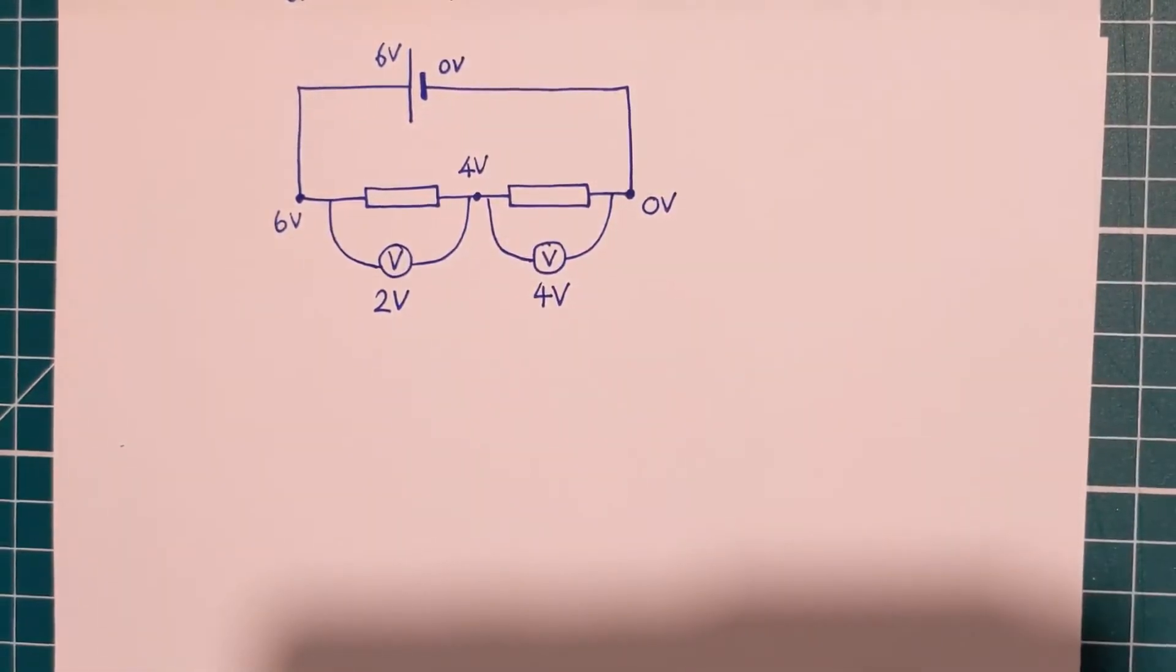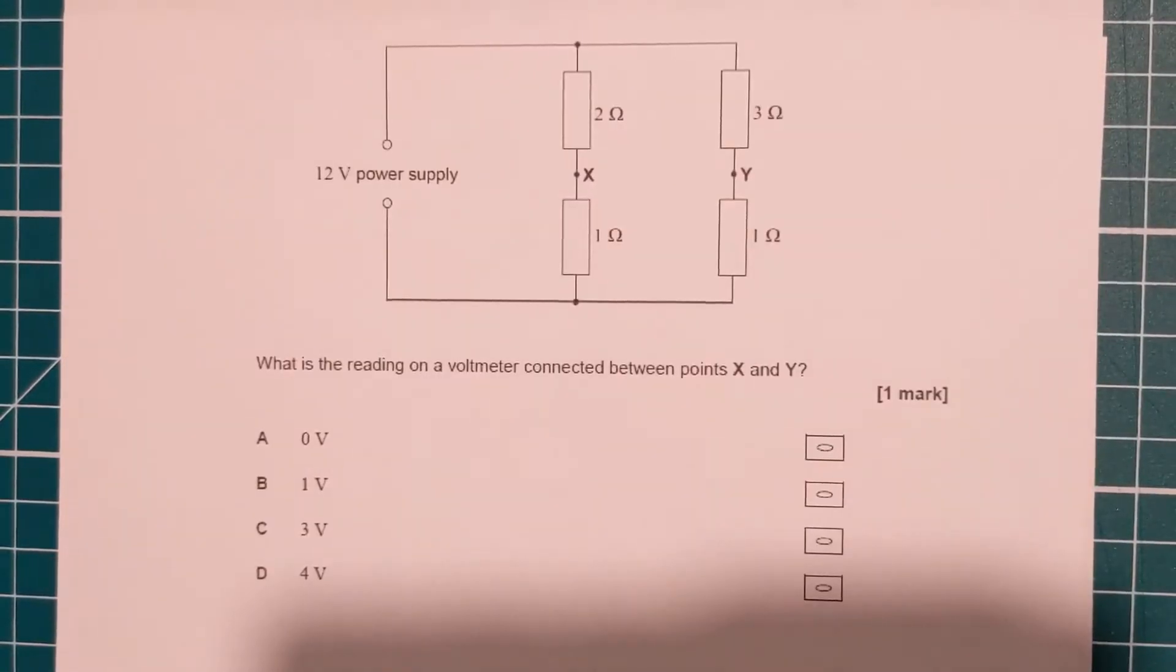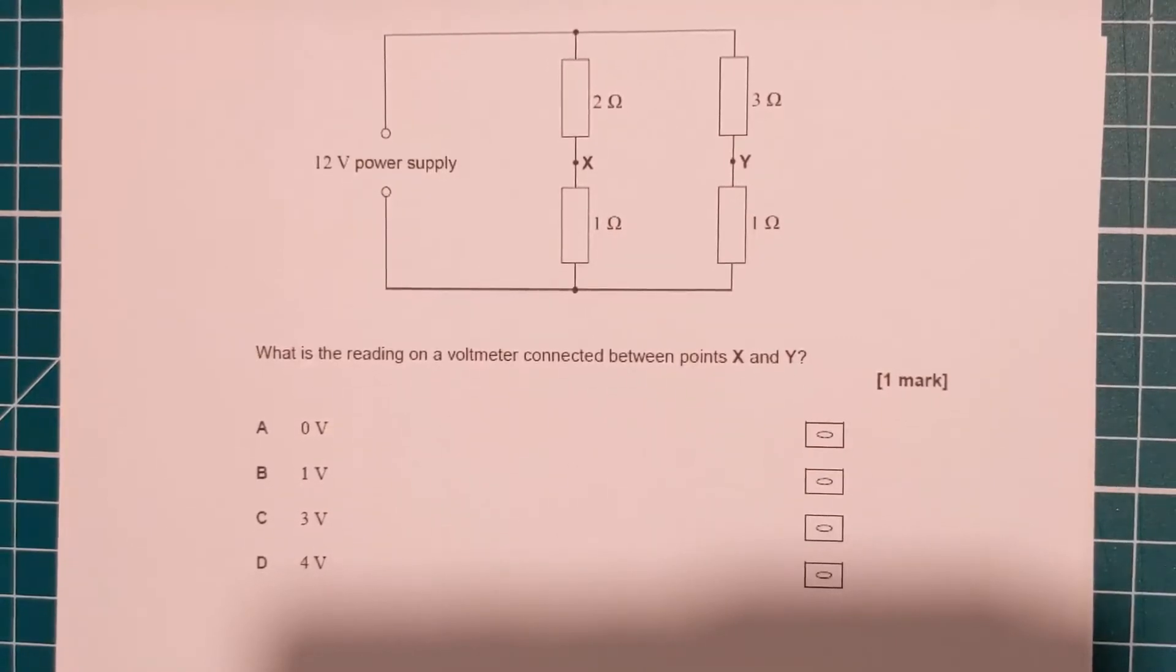So when we say that a voltmeter reads potential difference, we mean that the voltmeter reads the difference in potential between two places. And bearing that in mind, have a go at this lovely question.